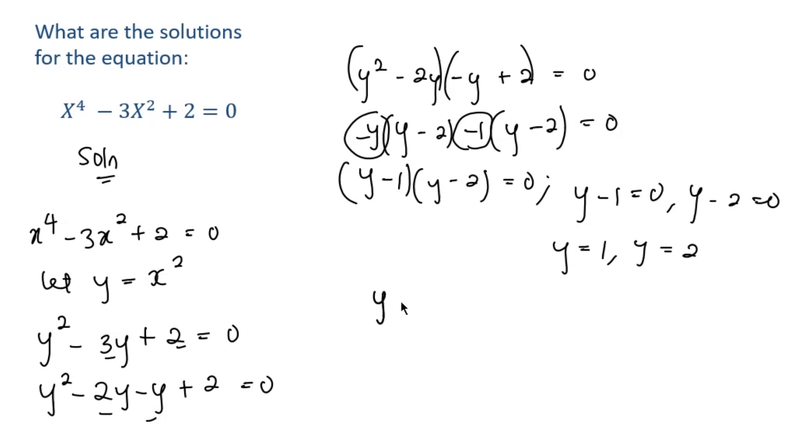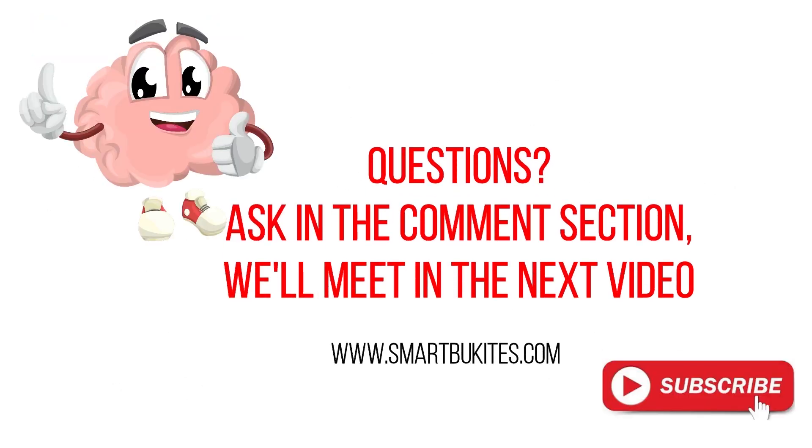Since we already know that y equals x squared, then x equals the square root of y. We shouldn't forget the plus or minus sign. Therefore, x equals plus or minus square root of 1, or plus or minus square root of 2. That's the value of x in this problem.